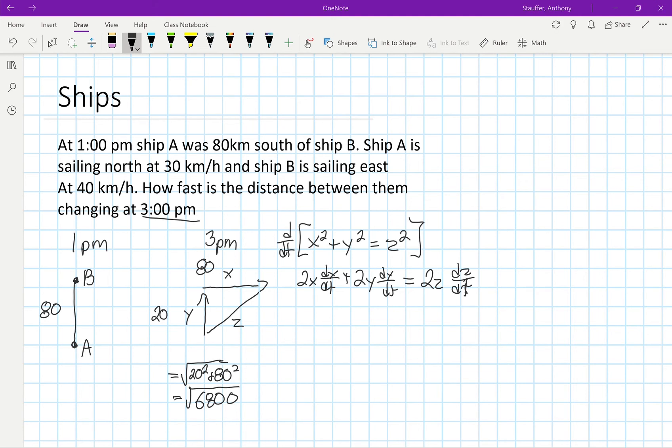From here I have 2 multiplied by 80, and my dx/dt is just the rate that it's sailing east at, so that's multiplied by 40, plus 2 multiplied by 20.